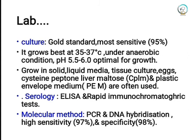For serology, ELISA and rapid immunochromatographic tests are used to detect antigen of the organism. Molecular methods including PCR (polymerase chain reaction) and DNA hybridization offer high sensitivity and specificity.